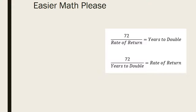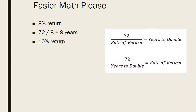Let's go through a quick example. Let's say you're getting an 8% return — how long is it going to take to double your money? 72 divided by 8 is 9, so it will take about 9 years. What about a 10% return? 72 divided by 10 is 7.2 years to double your money.